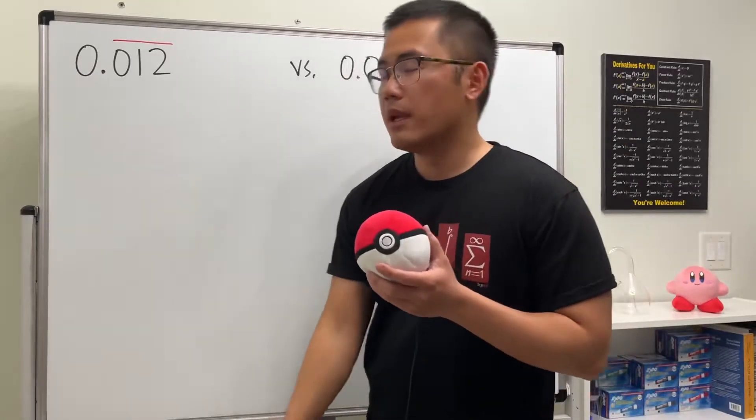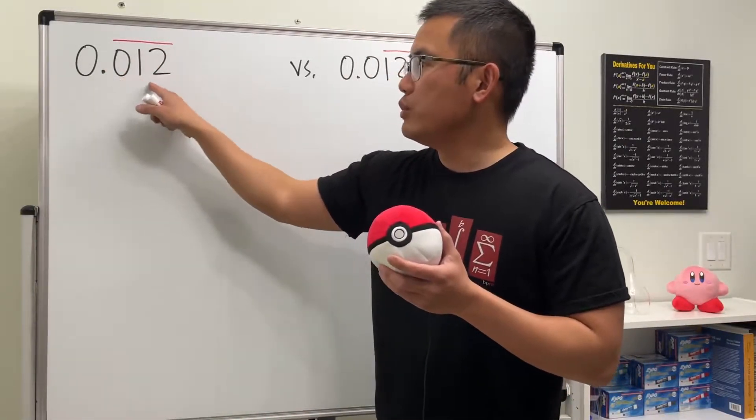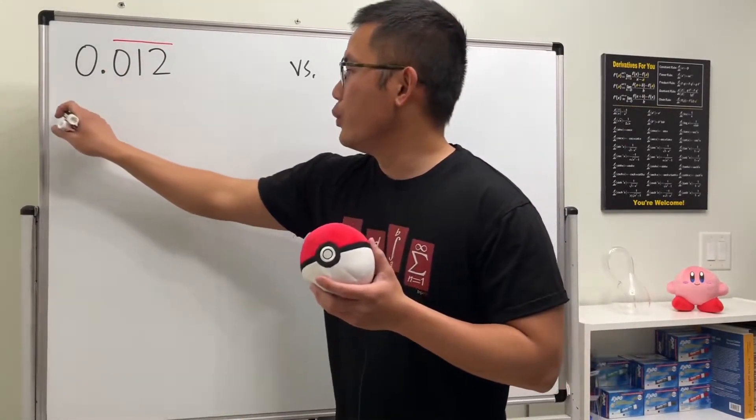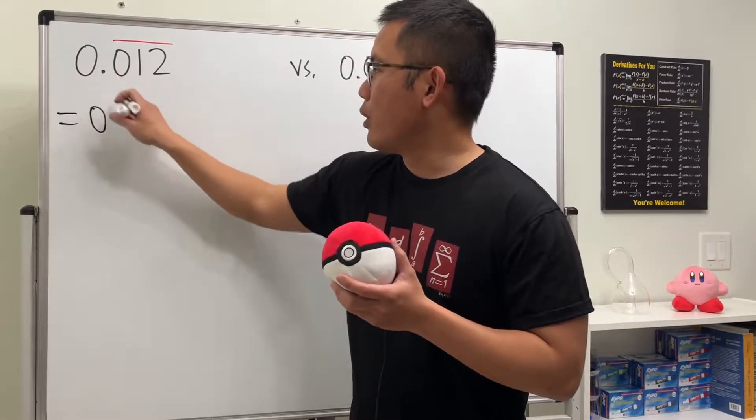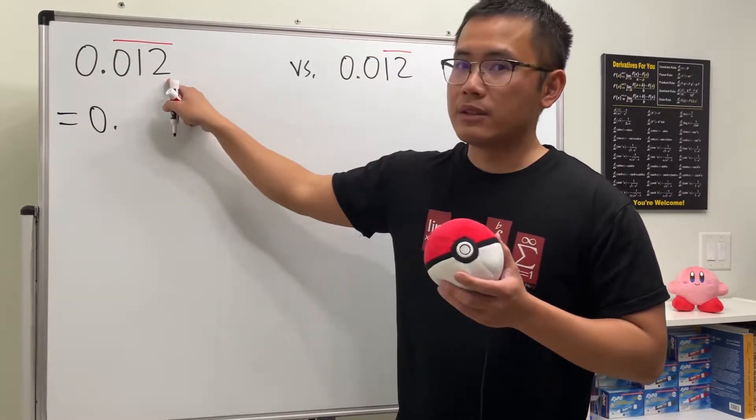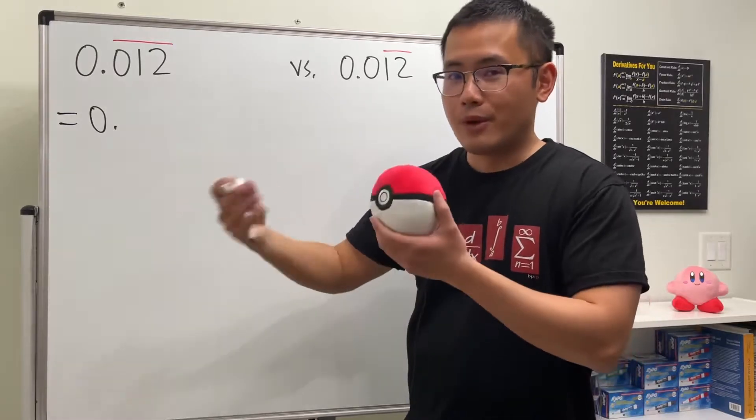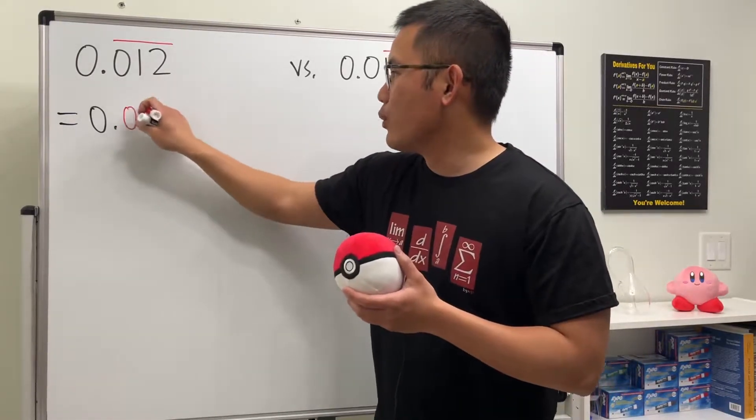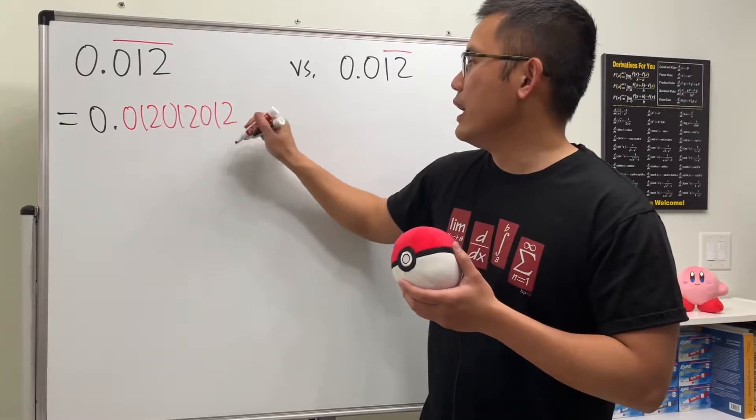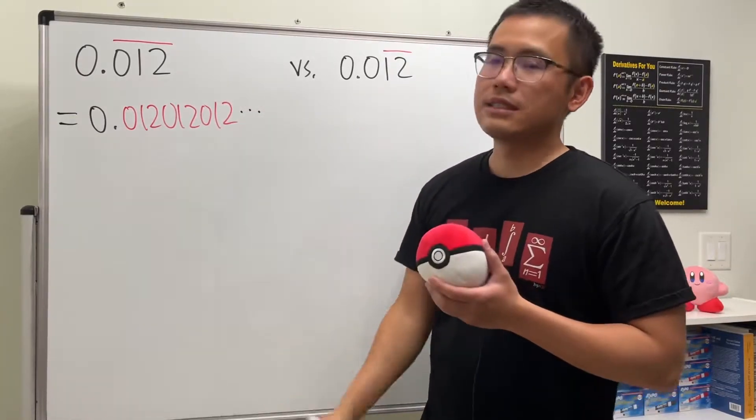So let's take a look at the first one. Because the bar is over these three digits, this means we have 0.0, and then you just write down these three numbers over and over. So we have 0, 1, 2, 0, 1, 2, 0, 1, 2, and so on. That's the idea.